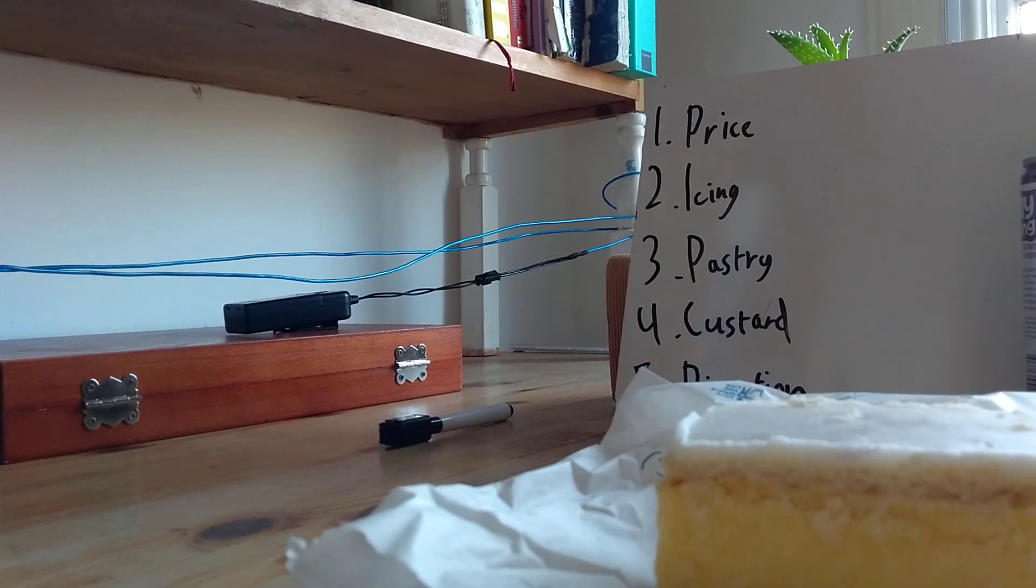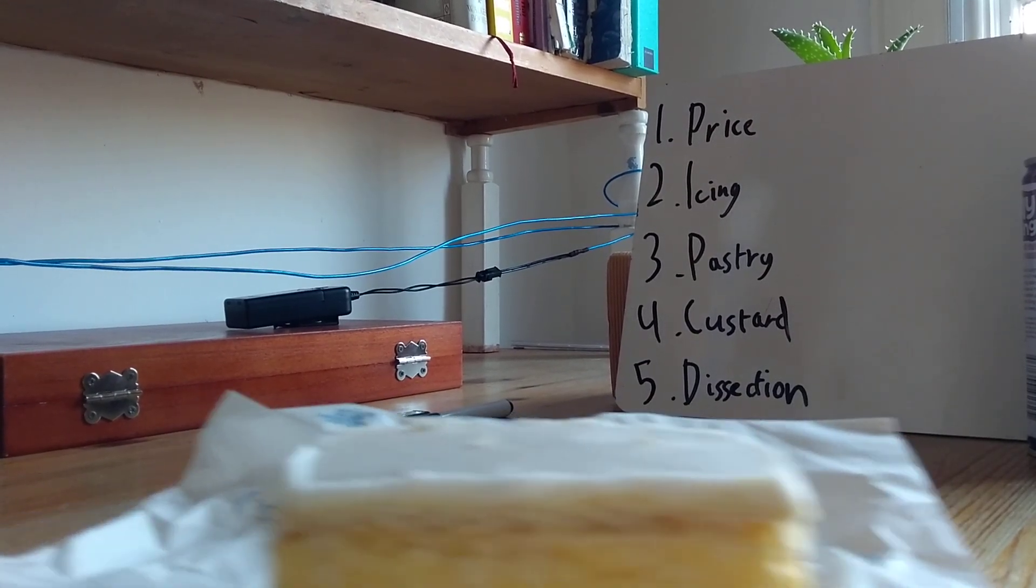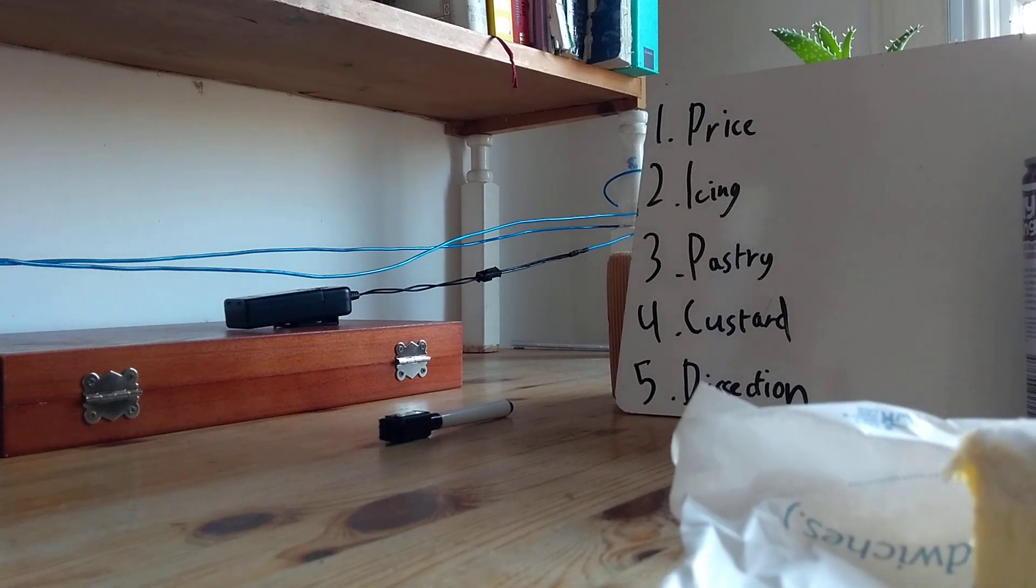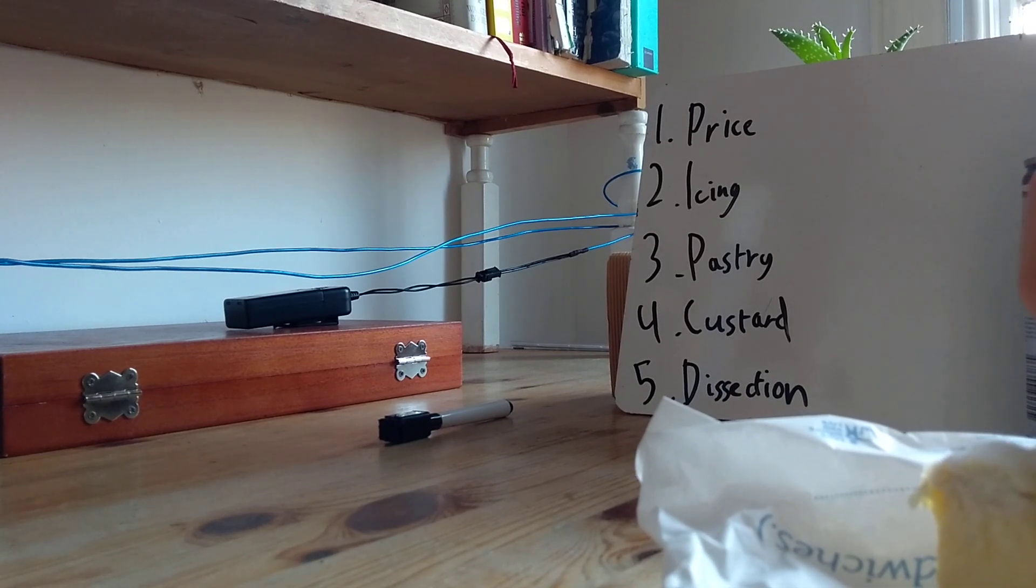So, we're going to start off with dissection at the bottom. Can you see that? Yep. So, I've always known the Custard Slices are easily dissectable.